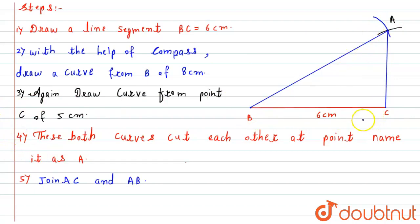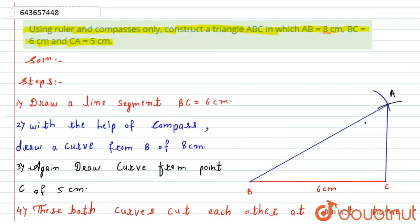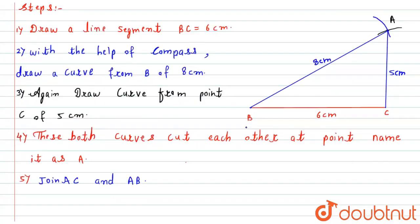So it will form a triangle ABC, which will be nothing but my required answer. Okay, and here the length of this AB I can say is 8 centimeter, and AC is 5 centimeter, as per the given question. So this is the required solution for this particular question.